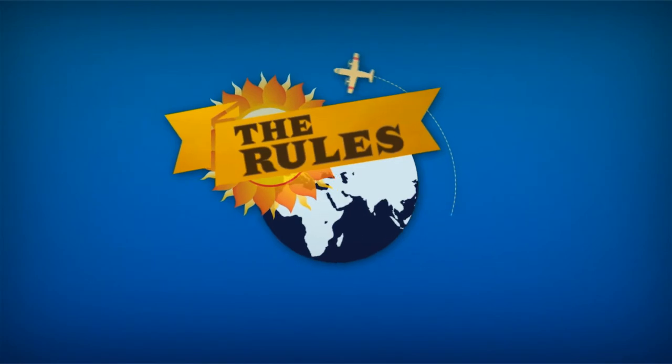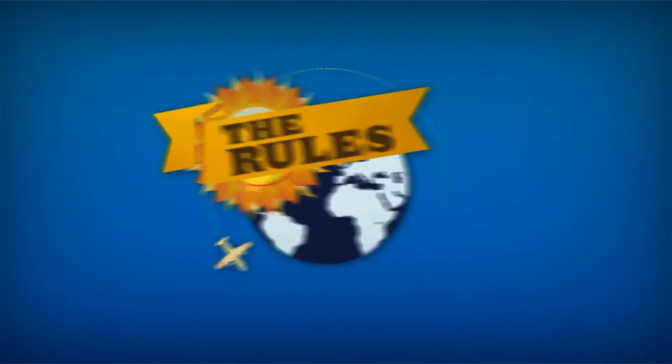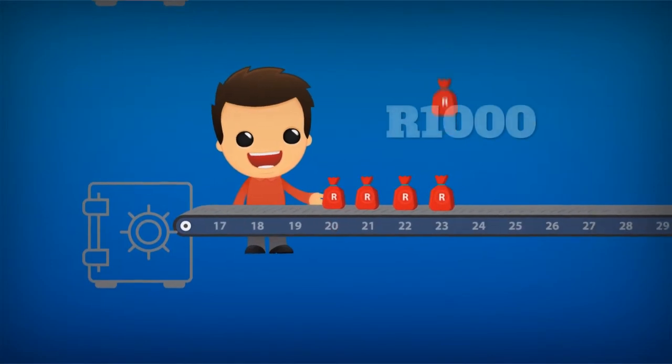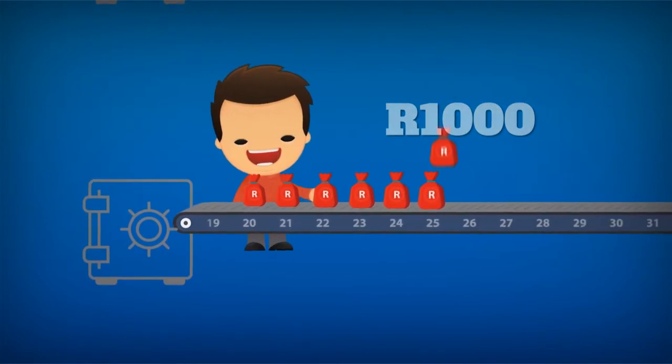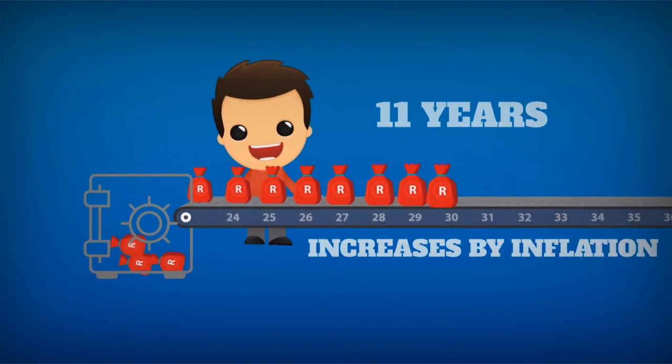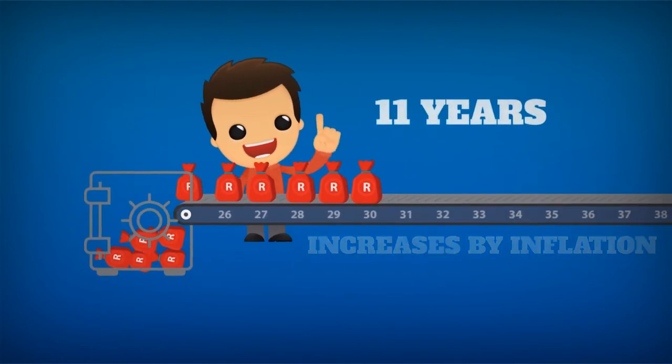Those are the rules. Now let's wrap up with a real world example. Mike starts investing at 20. He contributes 1,000 Rand in year one into the JSE and increases contributions by inflation each year for 11 years. After 11 years, he stops contributing completely.